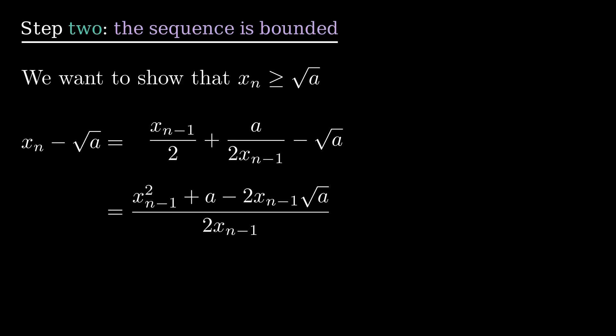Step 2. The sequence is bounded above by the square root of a. How? Now, consider the quantity and do some algebraic manipulations. After recognizing a perfect square, we see that. Hence, the sequence is bounded above by the square root of a.